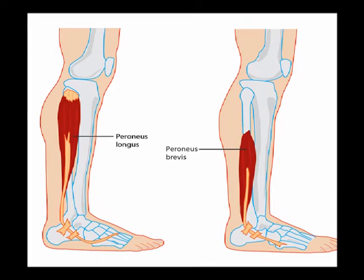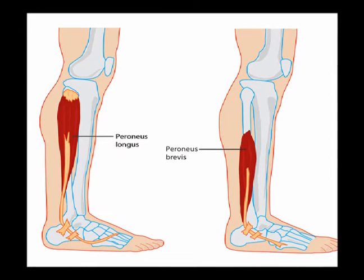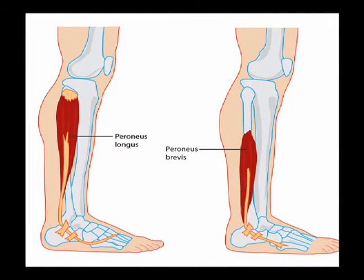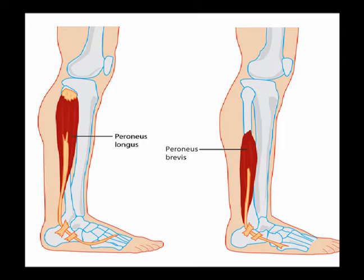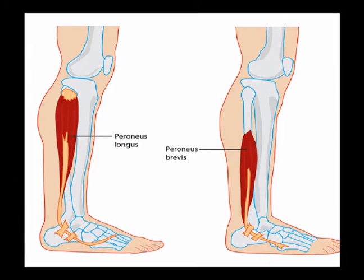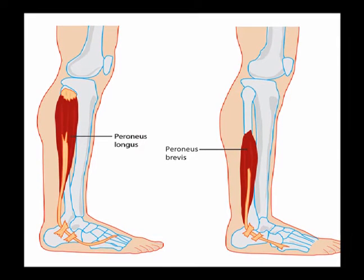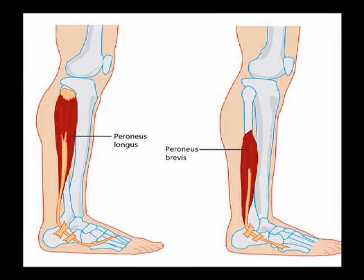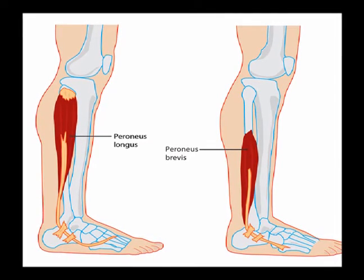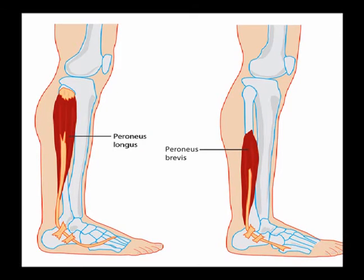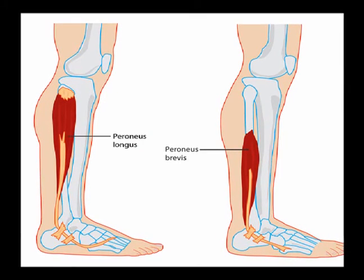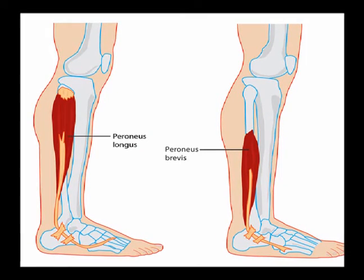The superficial peroneal nerve supplies motor innervation to the lateral aspect of the lower leg. The muscles are the peroneus longus and the peroneus brevis. Both these muscles, when contracted concentrically, perform ankle eversion.